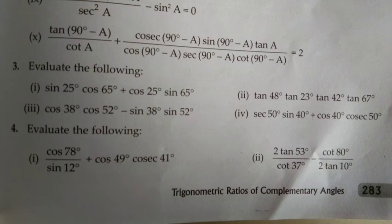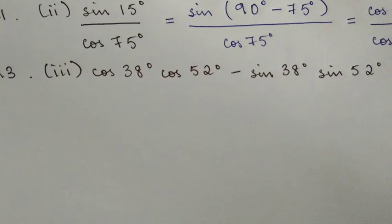Moving on to question number 3, it also says evaluate. We will substitute the numbers, make them in terms of complementary angles, and find the final answer. In question number 3, we have cos 38° cos 52° - sin 38° sin 52°. Notice that 38 and 52 are complementary, as 38 + 52 = 90.